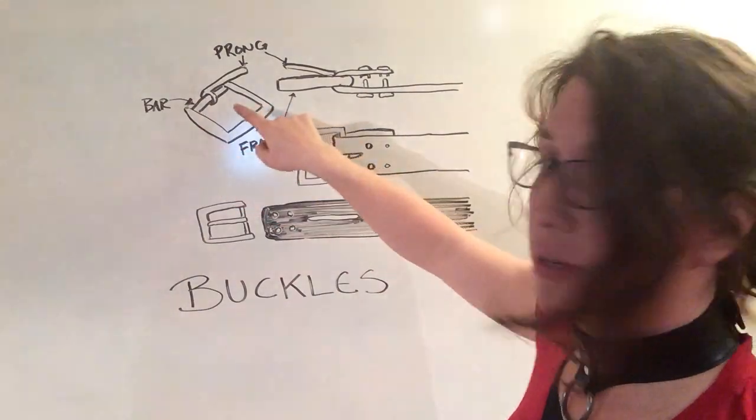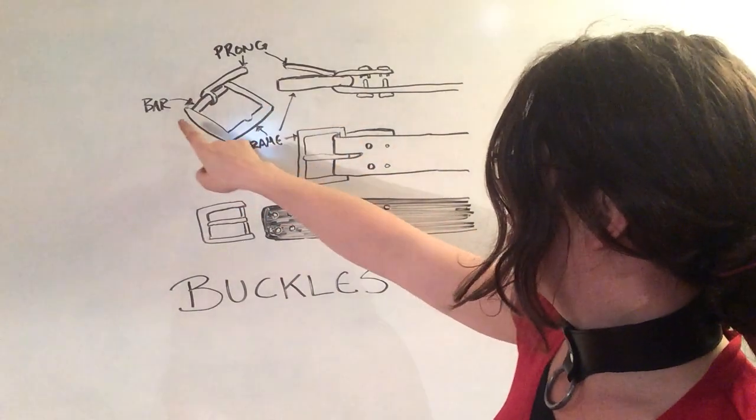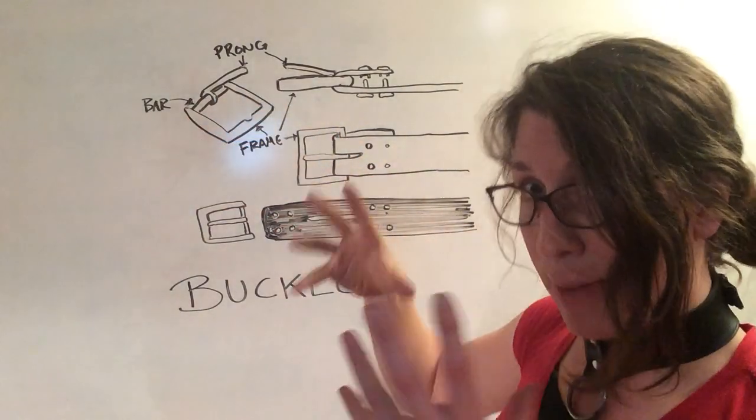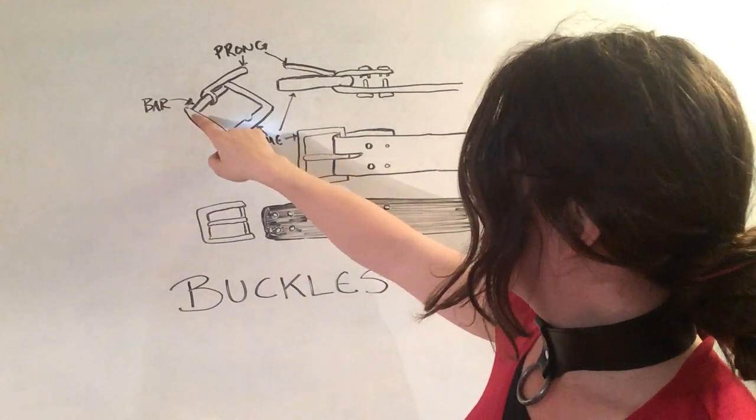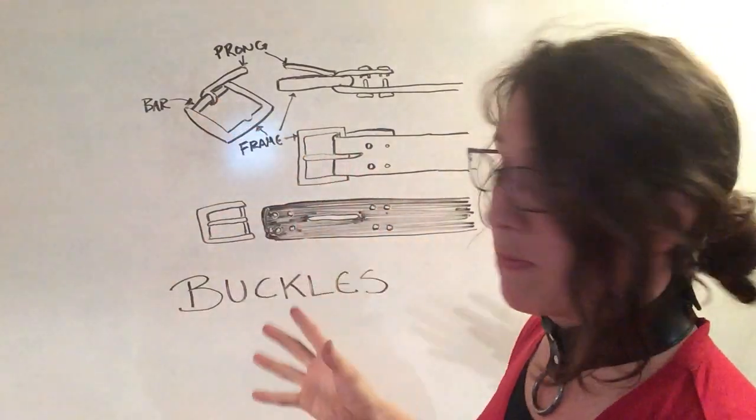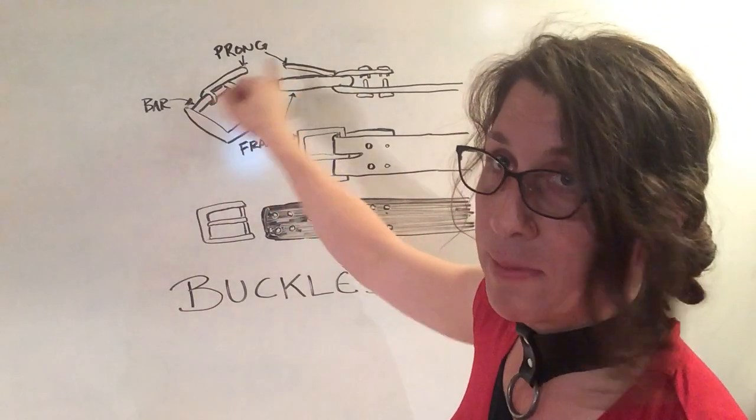So over here we have a diagram of what the buckle looks like. The outer section that captures leather is called the frame. The bar is actually wrapped by the leather and allows the prong to pierce through.